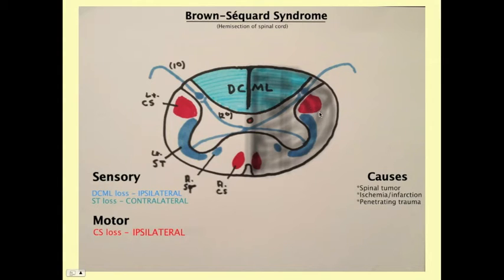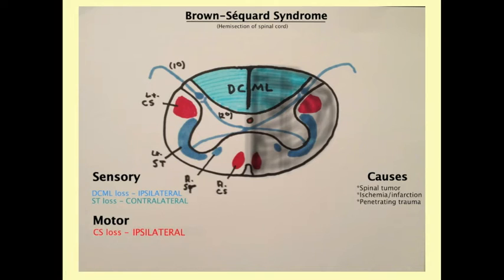The corticospinal tract loss is also ipsilateral, because it's already decussated as it travels downward. So with the DCML it's ipsilateral because it hasn't decussated yet (traveling upward), and with the corticospinal tract it's ipsilateral because it has already decussated (traveling downward). Both result in deficits on the same side as the lesion.